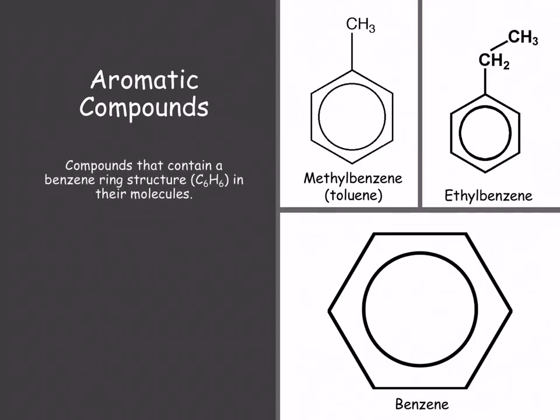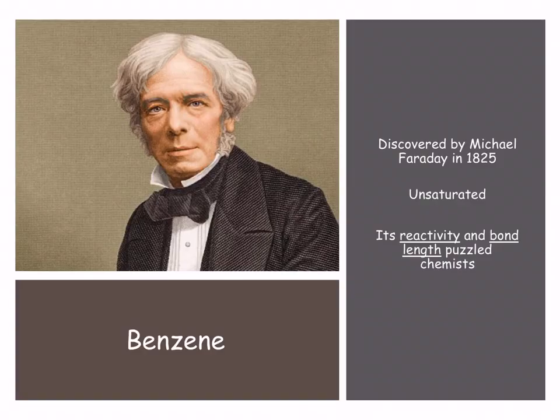C6H6 is the molecular formula for benzene. Where did it come from? Well, Mr. Faraday, as you can see there, fabulous picture of him. He had a look into benzene in 1825, and he noticed that it was unsaturated.